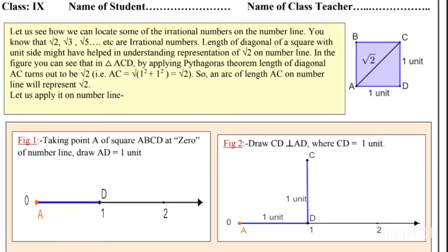This is your Mathematics worksheet number 14 of 6 August for class 9. Let us see how we can locate some of the irrational numbers on the number line.